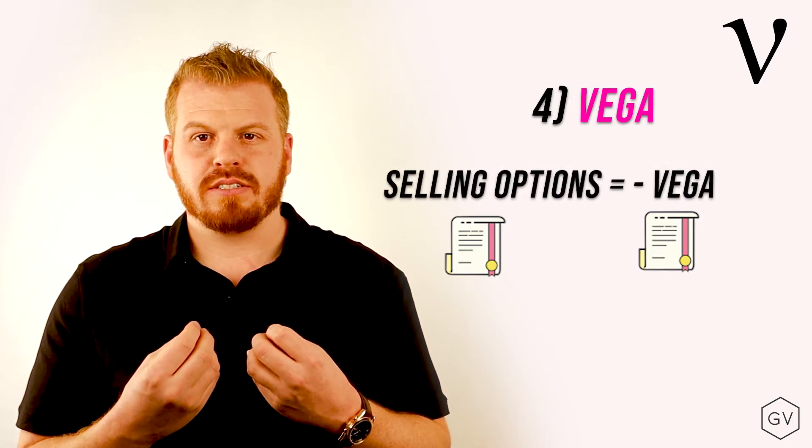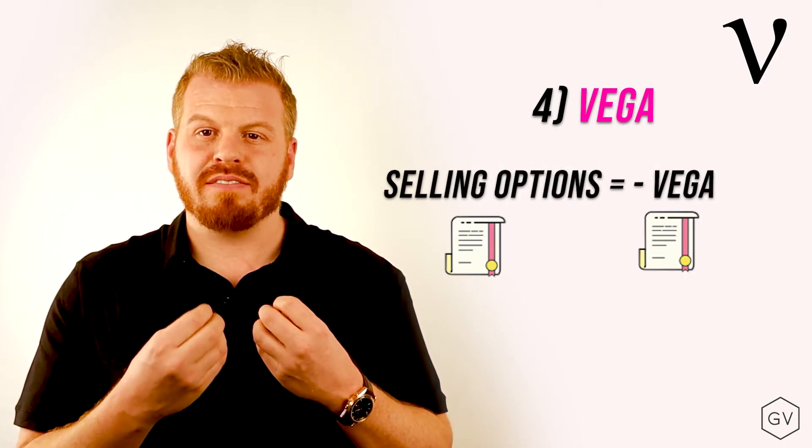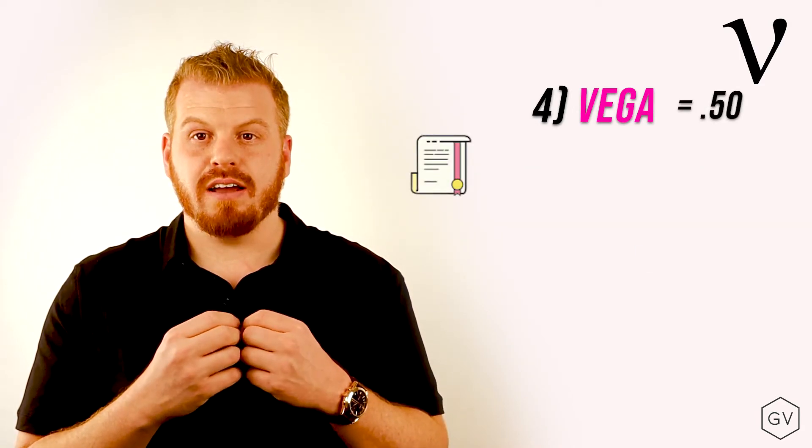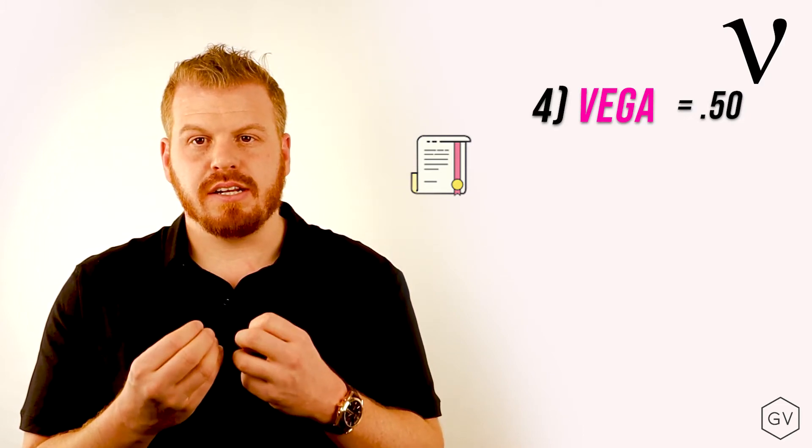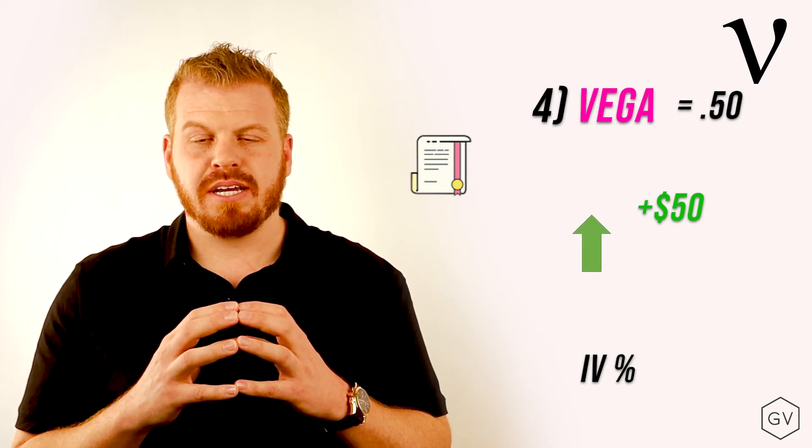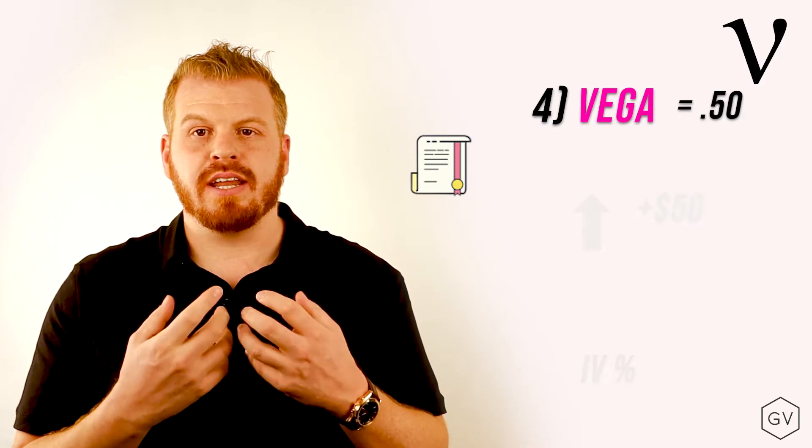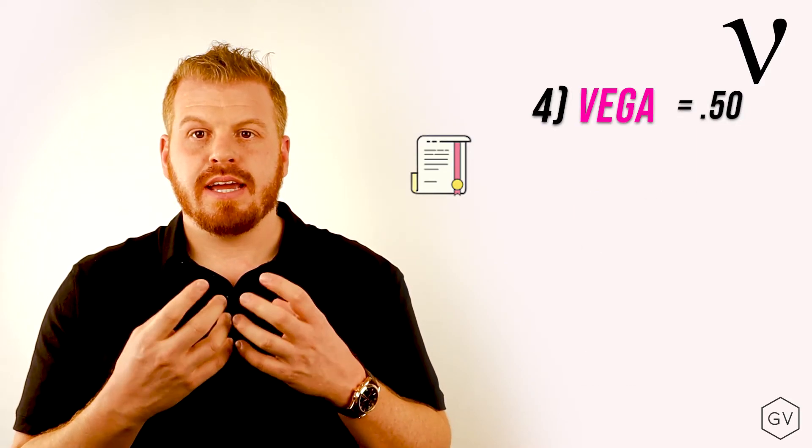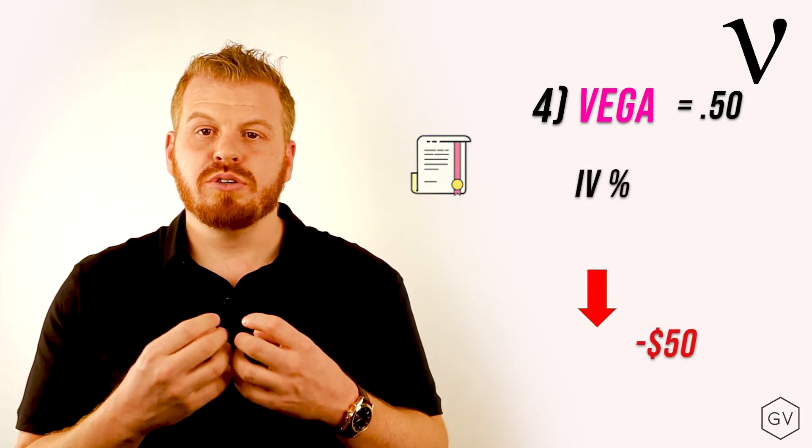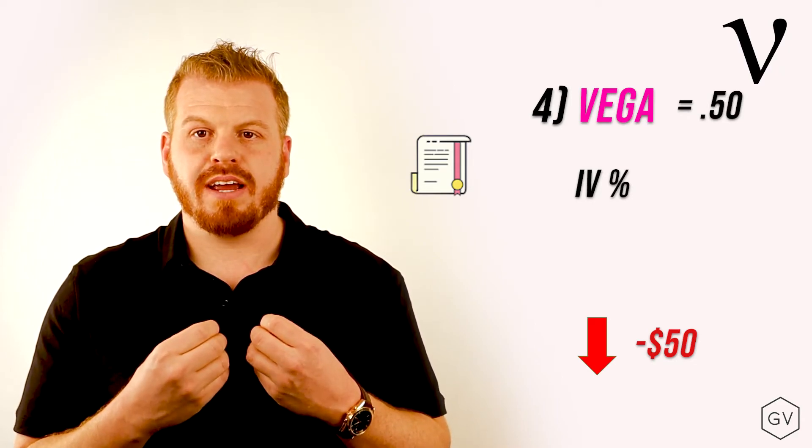If you own a stock option with a vega of 0.5 and implied volatility increases one point, your option will gain 50 dollars. Because that's 0.5 times 100 shares for a one point increase in implied volatility. It's the opposite for a one point decrease in implied volatility. Your option will lose 50 dollars for a one point decrease in implied volatility with a vega of 0.5.